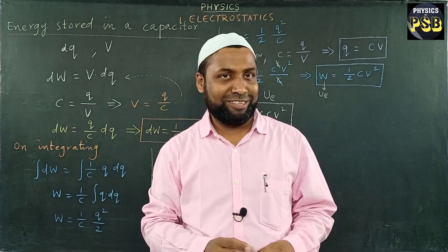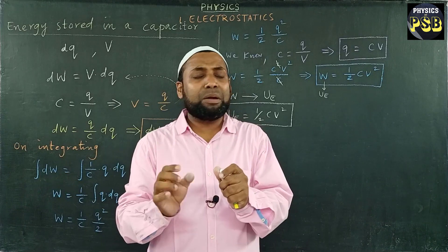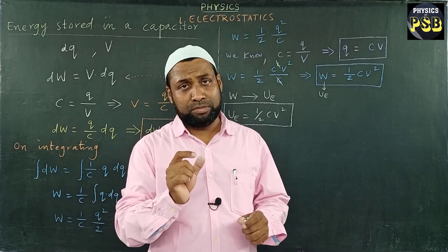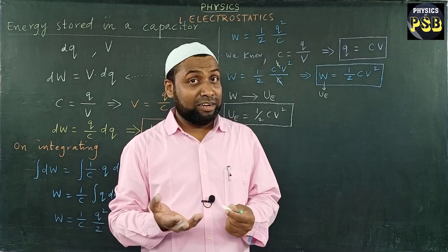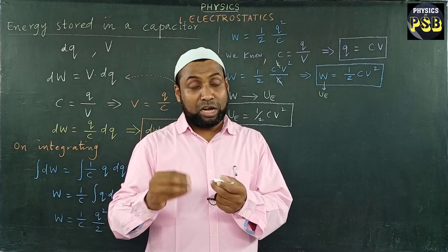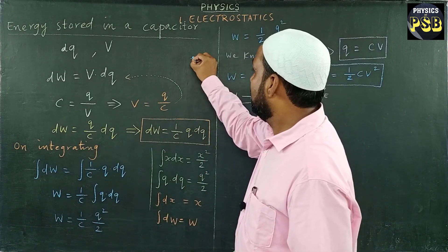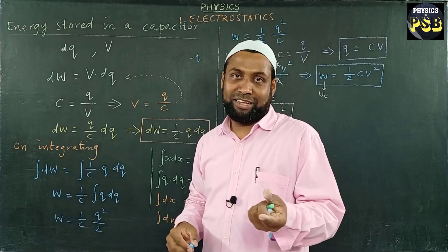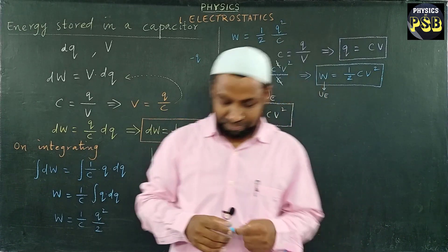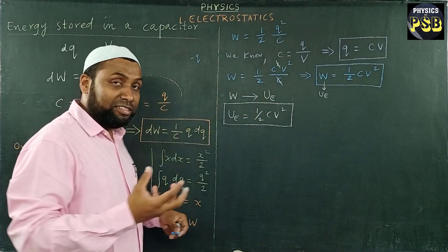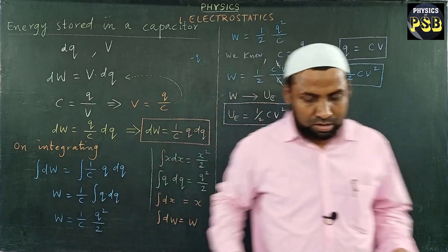Where does this energy store in the capacitor? Let us find out. We know a capacitor consists of two metal plates separated by a small gap, with a small space present between the two plates. When we connect a battery to a capacitor, charges move from one plate to another plate — electrons carrying minus Q charge move from one plate to the other. This is how work is done by the battery to supply charge, and that work is stored in the form of energy.